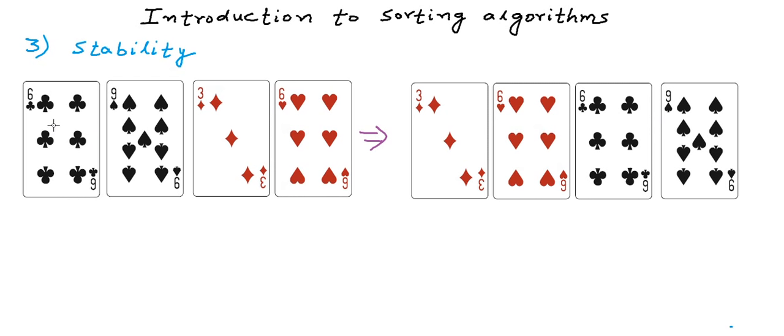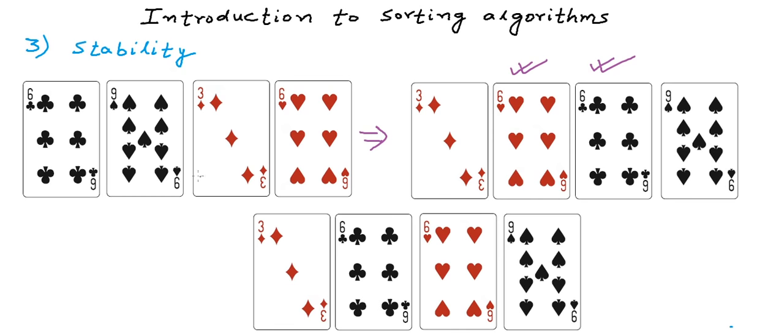But when we have this permutation which is a sorted arrangement, six of heart, this particular card has come before six of club. A stable sorting algorithm in the case of equality of key or the property upon which we are sorting preserves the relative order of elements. So if the key is equal, if an element was coming before in the original list, it will also come before in the sorted list. A stable sorting algorithm guarantees that. So if we use a stable sorting algorithm, we will get this particular permutation where six of club will be before six of heart.